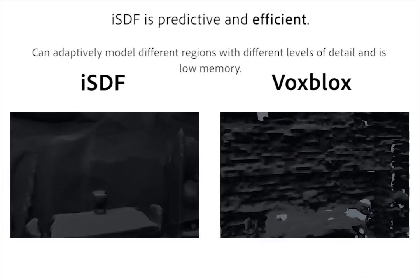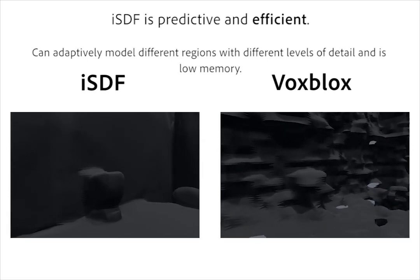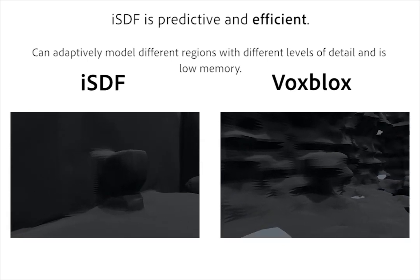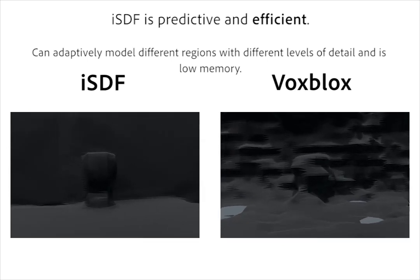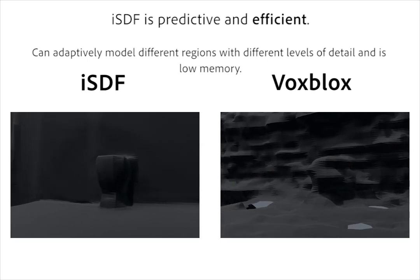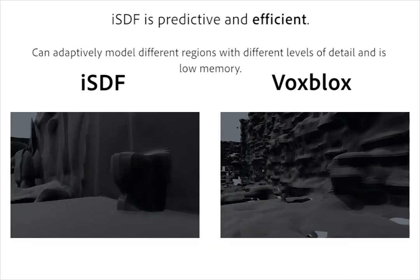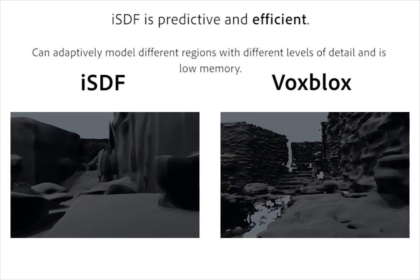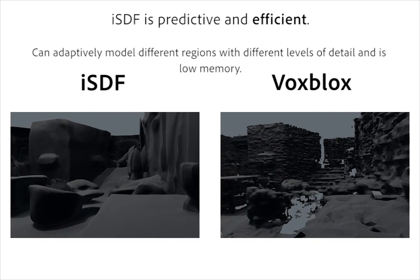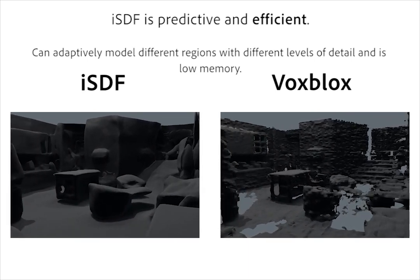A second key property of ISDF is that it is efficient. Unlike voxel grids, it can adaptively model different parts of the scene with different levels of detail, producing accurate object reconstruction, such as this lamp, all with just five megabytes of memory.